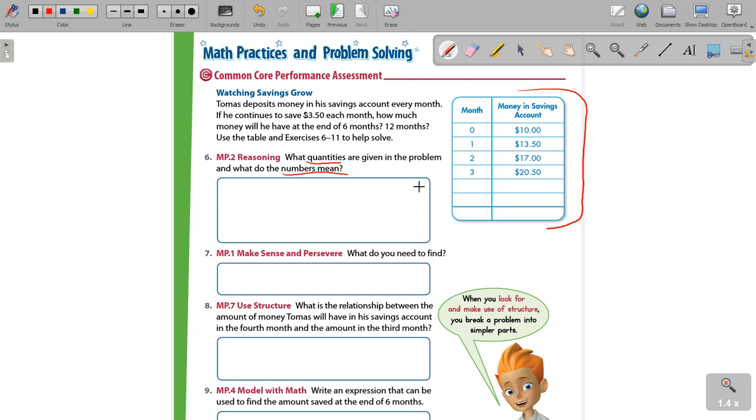So the quantities here, they're giving us, well, they're giving us $3.50. $3.50 is the amount, equals amount, this is the amount that Tomas saves each month. So $3.50 is the amount Tomas saves each month. I would write that down.